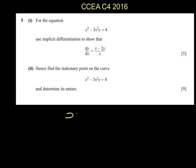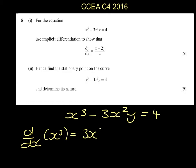We want to use implicit differentiation to differentiate x cubed minus 3x squared y equals 4. If we differentiate x cubed, we're going to get 3x squared.